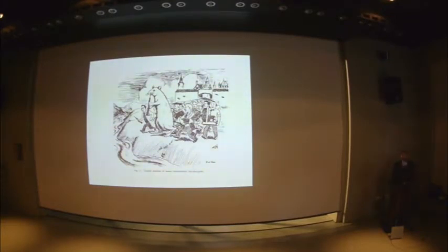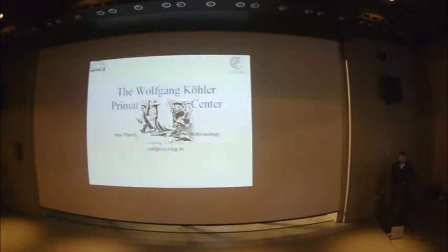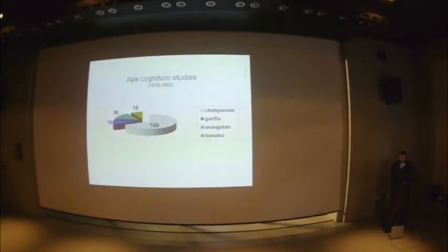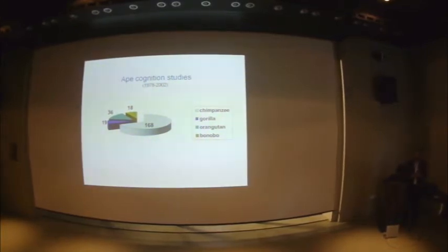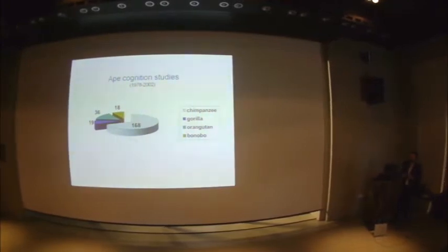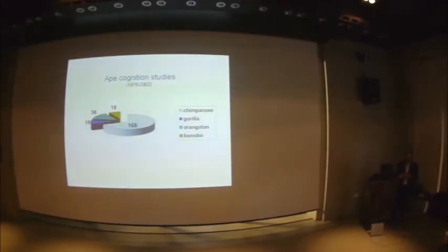Things have changed and now we study more species and the field has become more diverse. But when you look at the studies that have been done in apes, you still see that there are some imbalances. When you look at the four great apes—chimpanzees, gorillas, orangutans, and bonobos—most of the studies by far have been done with chimpanzees, which means that in a sense we still have that old problem.